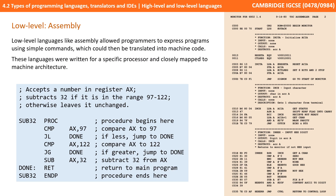Low-level languages, like Assembly, allowed programmers for the first time to express programs using simple commands, which could then be further translated into machine code. These languages were written for a specific processor and therefore closely mapped to the machine's architecture.